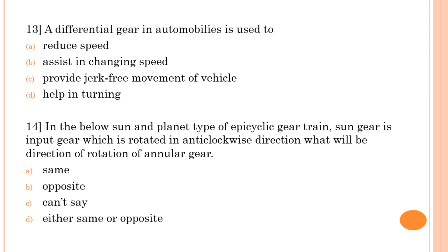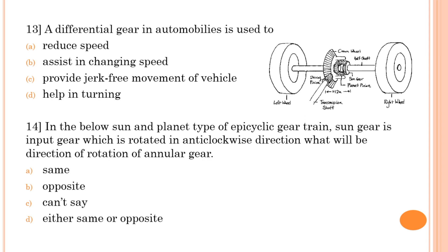Thirteenth question: a differential gear in an automobile is used to? The diagram shows a differential gearbox connecting the rear axle. Its main function is — while taking a turn — to allow the two wheels of the rear axle to rotate at different speeds. From the options: reduce speed — no; assist in changing speed — no; provide jerk-free movement — no. The correct answer is: helps in turning.